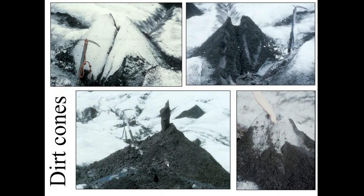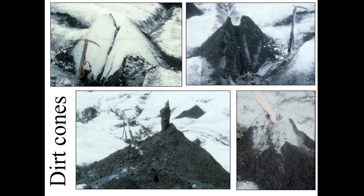Likewise, this one looks like a pile of dirt with a dirt chimney: what we have here is the bottom of a moulin — a meltwater pathway down into the glacier. When the glacier was much higher, a meltwater pipe came down into the ice; it subsequently filled with debris, the surrounding ice melted away under ablation, and the debris emerging from the pipe fell out onto the surface making a protective layer, creating this little volcano-shaped dirt cone. These illustrate the interactions going on between ice, debris, and geographical variations in ablation that affect glacier surface morphology.